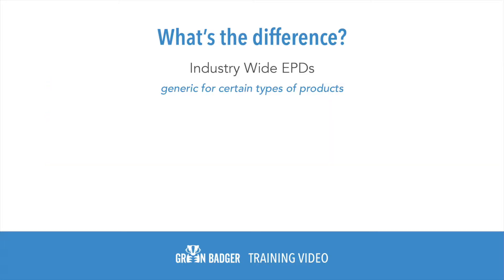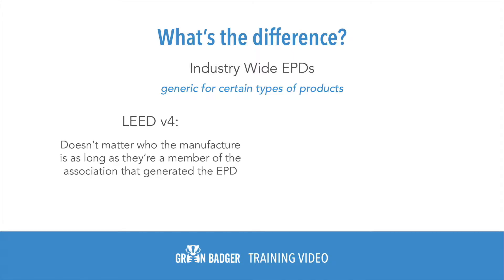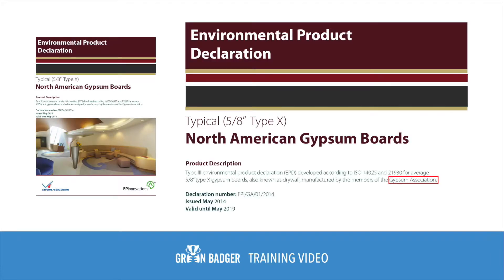What's the difference, you may ask? Industry-wide EPDs are generic for certain product types, such as type X gypsum board or concrete. For version 4, it doesn't really matter who the manufacturer is, as long as they are a member of the association that generated the EPD. As you can see here, this EPD is from the U.S. Gypsum Association. Anyone from North America who is a member can claim this for their product.